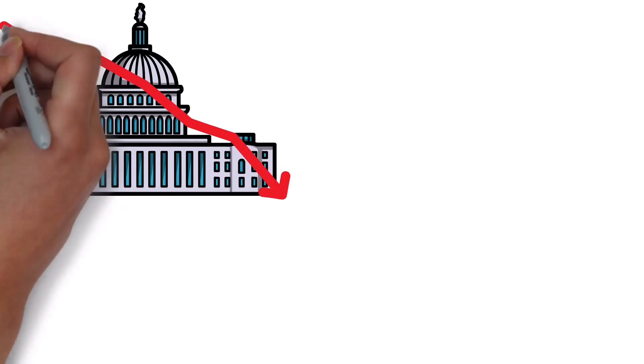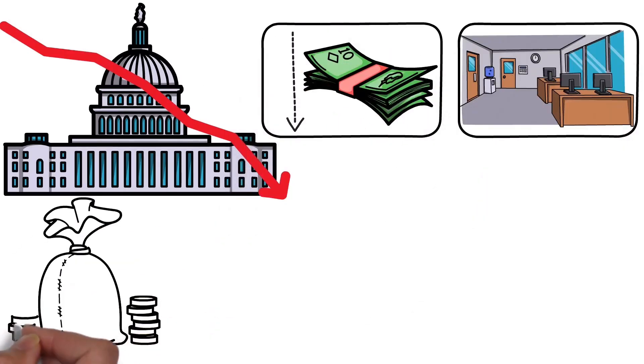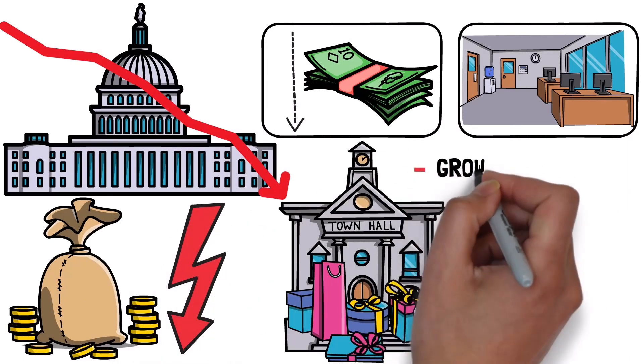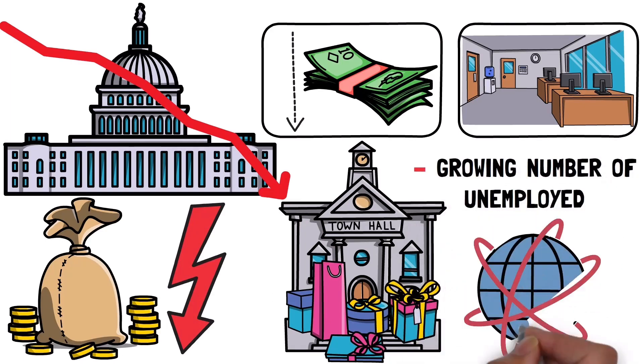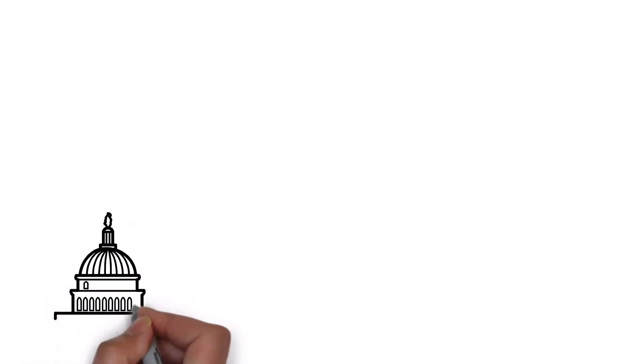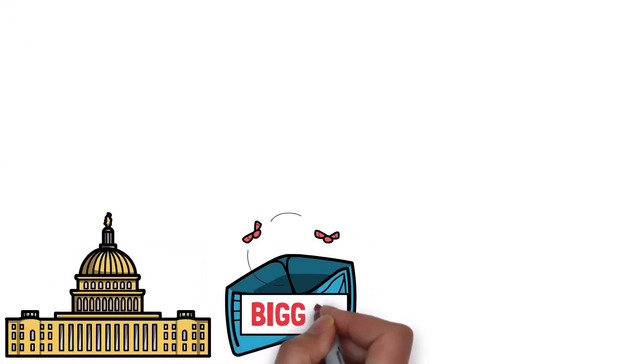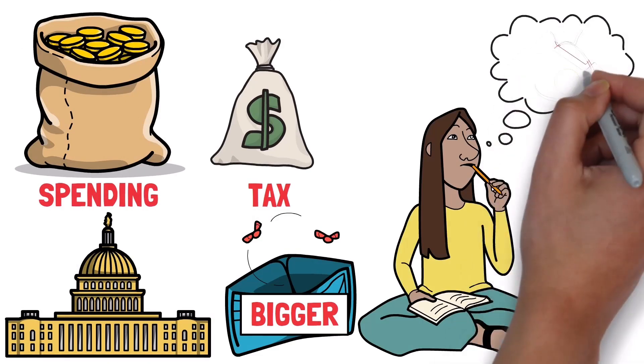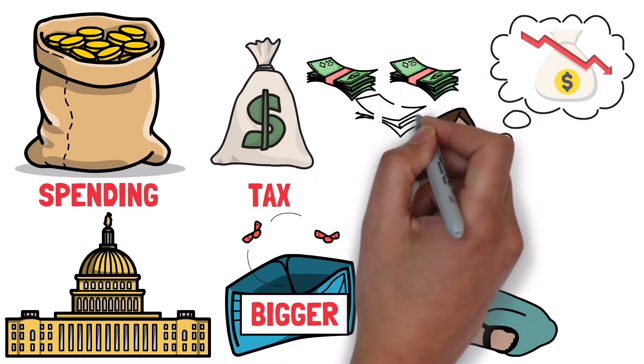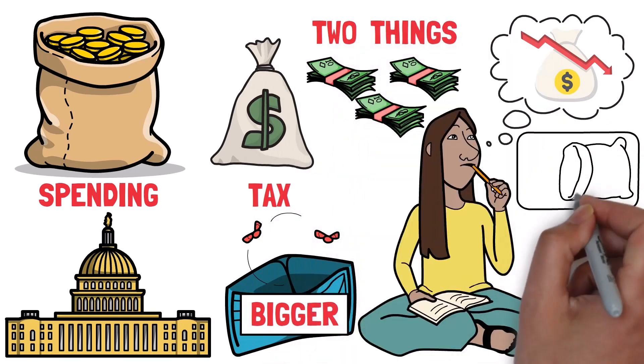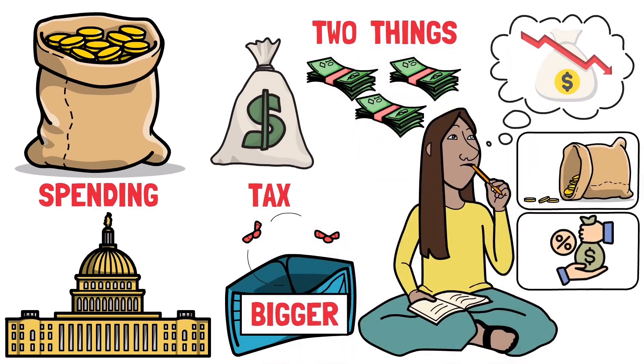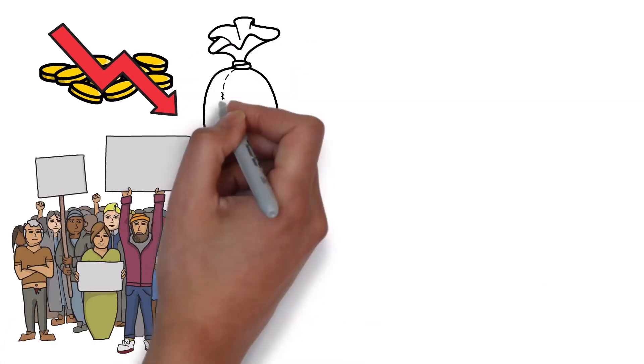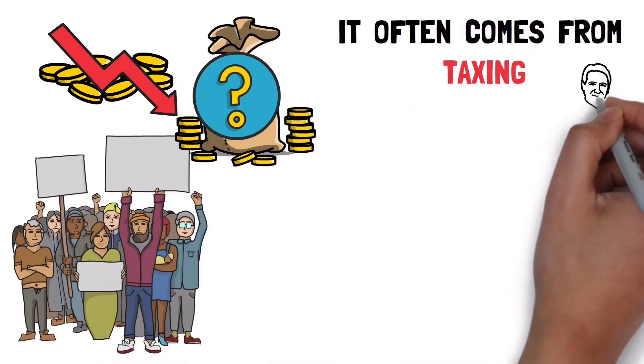All of this affects the government because lower incomes and higher unemployment mean the government collects less in taxes. At the same time, the government has to increase its spending to help the growing number of unemployed people and stimulate the economy. During this process, the government's budget deficit gets bigger because it spends more than it collects in taxes. This is what's happening when you hear about the budget deficit on the news. When governments spend more money than they have, they need to do two things: Either get more money from taxes or borrow it. But when people's incomes are dropping and there are a lot of unemployed people, where does the extra money come from? Well, it often comes from taxing the wealthier individuals.